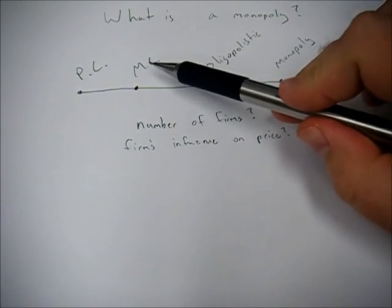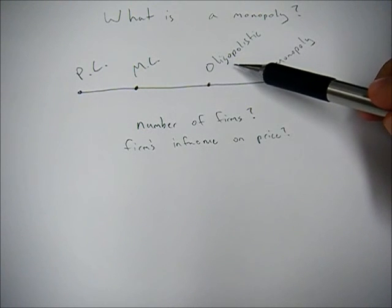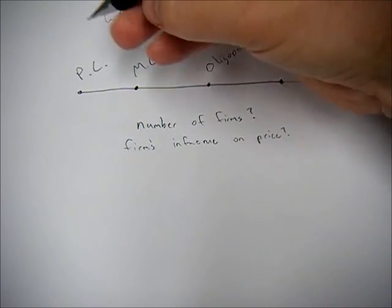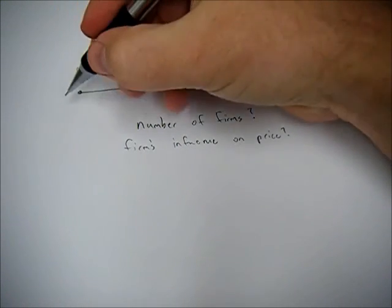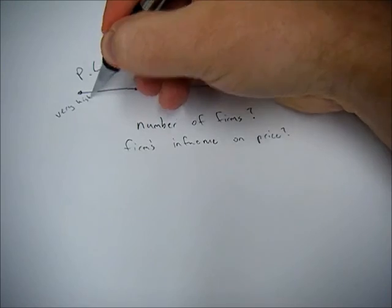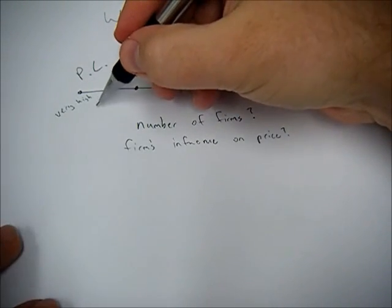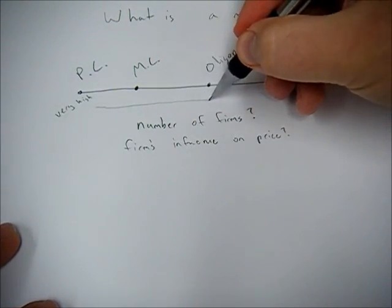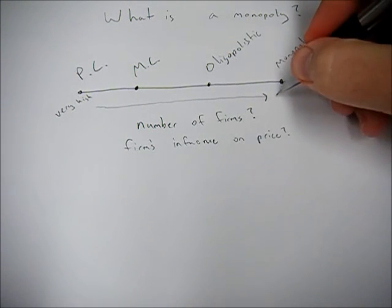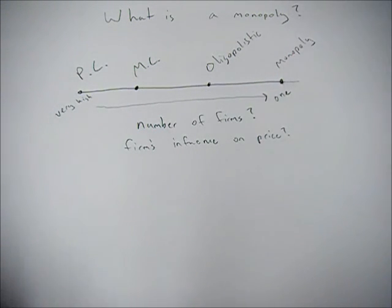In between we have monopolistic competition and oligopolistic. The easiest way to tell the difference between these different market structures is how many firms there are in the market. When we get to the perfect competition side, it's a very high number of firms. But as we move along this continuum, we have less and less firms in the market until we get to a monopoly where there's only one firm selling everything.